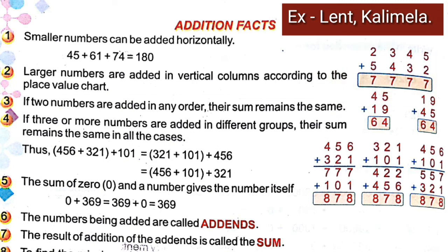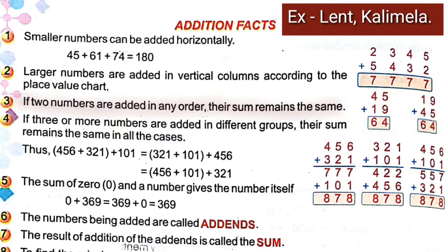The third fact is: if two numbers are added in any order, their sum remains the same. For example, 45 plus 19 gives 64, and 19 plus 45 also gives 64. So numbers can be added in any order and the sum stays the same.